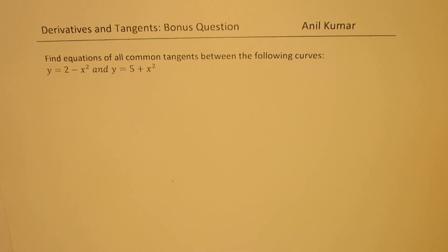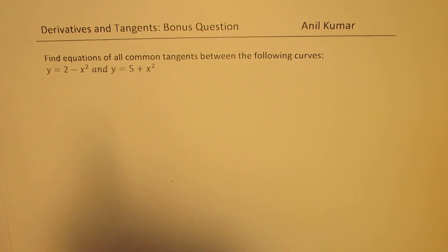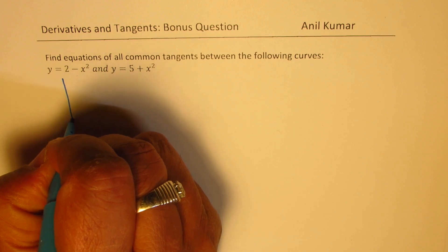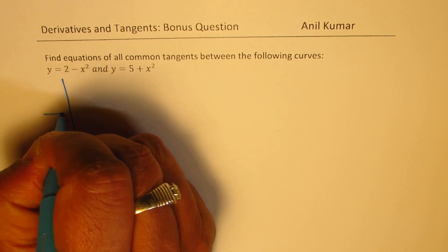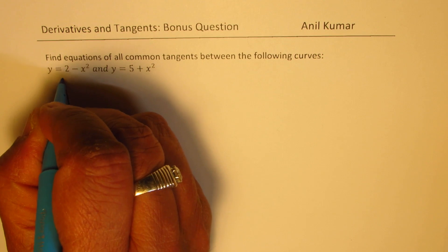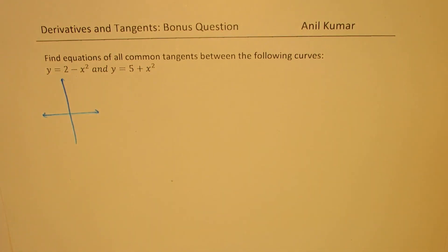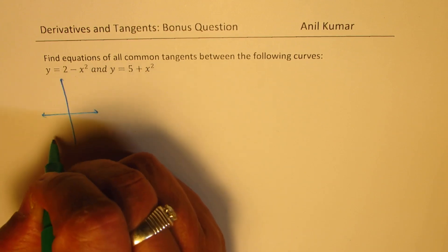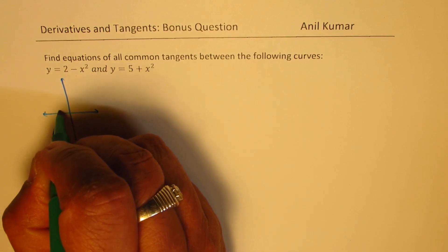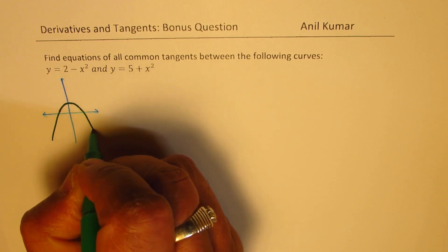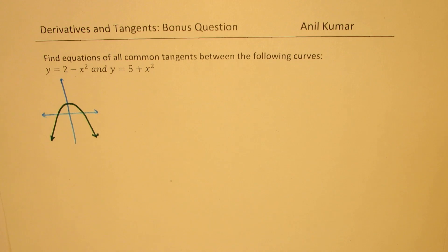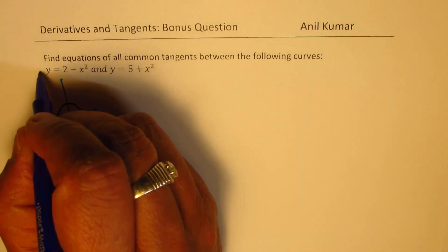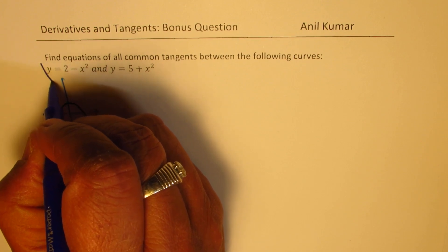So these are two different parabolas and we need to find equations of common tangents. Let us try to understand this situation with a small sketch. We have two parabolas: 2 minus x squared opens downwards with y-intercept 2, and the other one, 5 plus x squared, opens upwards.